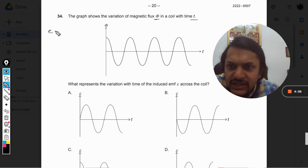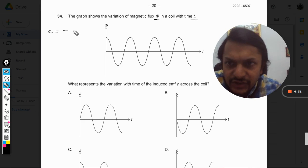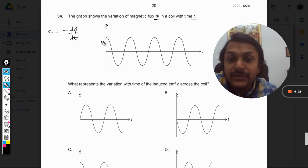So we know that there is a formula that relates, the Faraday's law of electromagnetic induction, that is given by e is equal to minus d phi by dt.